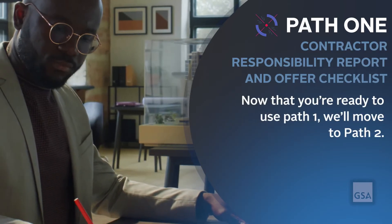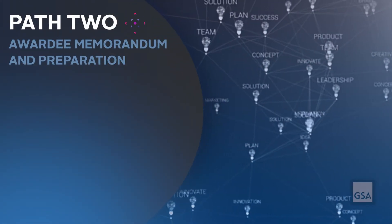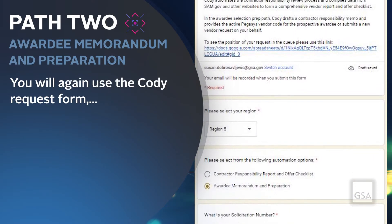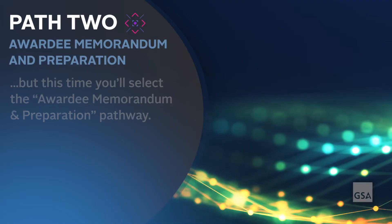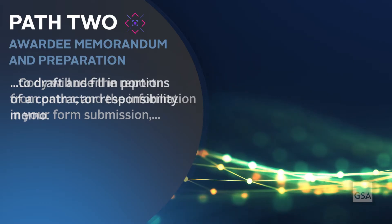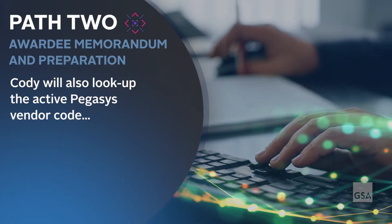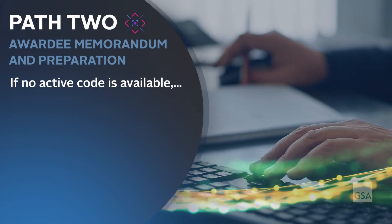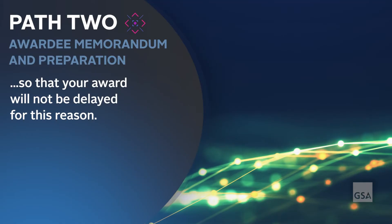Now we'll move to Path 2: Awardee Memorandum and Preparation. This pathway should be used when you have identified your potential awardee. You will again use the Kodi request form, but this time select the Awardee Memorandum and Preparation pathway. Kodi will use the report from Path 1 and the information in your form submission to draft and fill in portions of a contractor responsibility memo. Kodi will also look up the active Pegasus vendor code and vendor address code for the prospective awardee. If no active code is available, Kodi will submit a Pegasus vendor code request on your behalf so that your award will not be delayed.